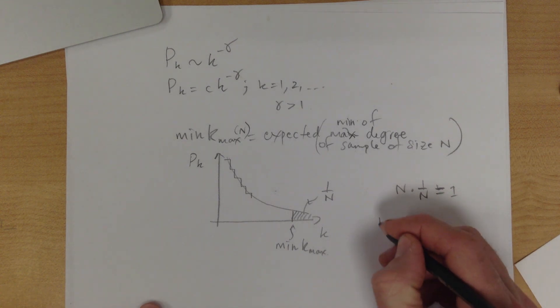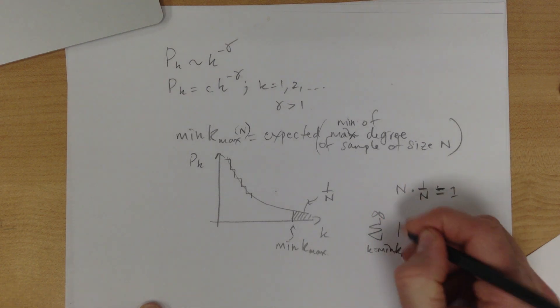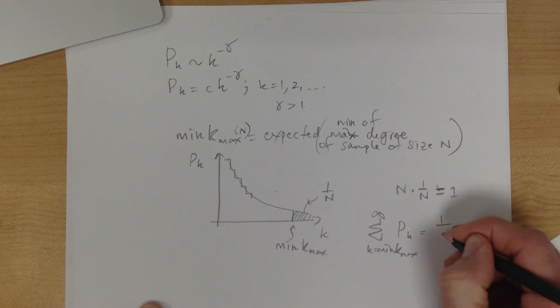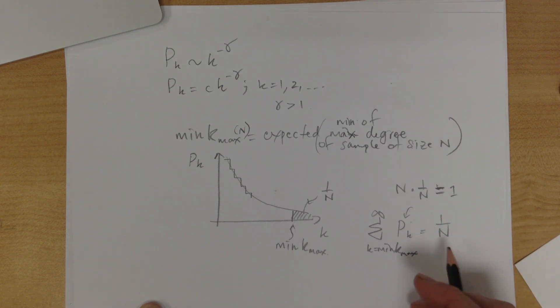So the setup then is, we want to say the sum from K equals min K max to infinity of P of K is equal to one over N. So we put the right thing in here, set it equal to one over N, mess things around.